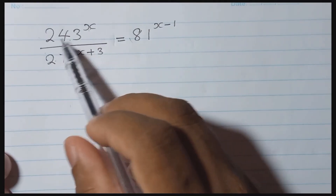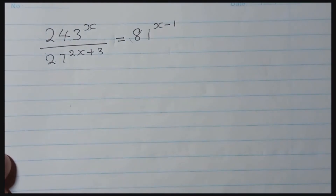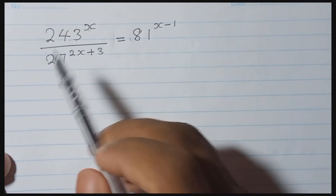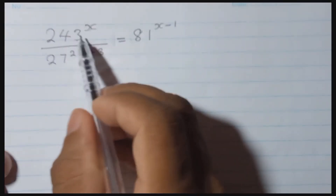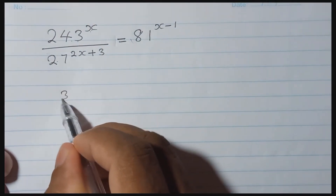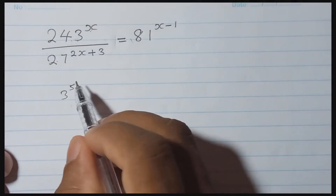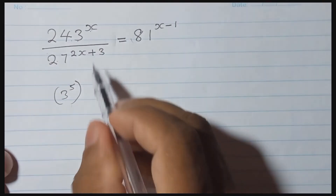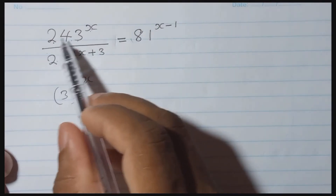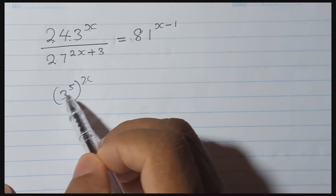We call this the index and this the base. Check whether you can write these numbers using a power of the same number. Now 243, 81, and 27 — can we write all of them with the same number as a power? Yes, we can. So I will write here: 243 means 3 to the power 5. That means 243 I can write as 3 to the power 5, and here will be just x.